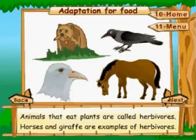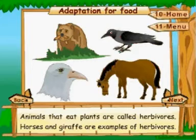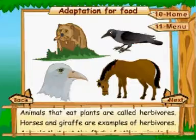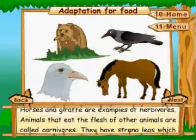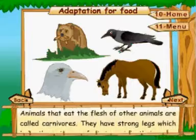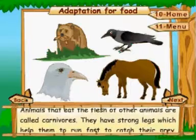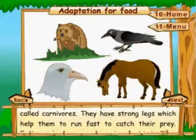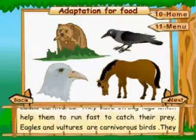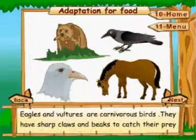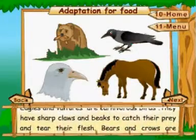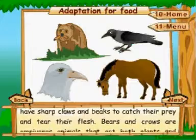Adaptation for food. Animals that eat plants are called herbivores. Horses and giraffes are examples of herbivores. Animals that eat the flesh of other animals are called carnivores. They have strong legs which help them run fast to catch their prey. Eagles and vultures are carnivorous birds with sharp claws and beaks to catch prey and tear flesh.